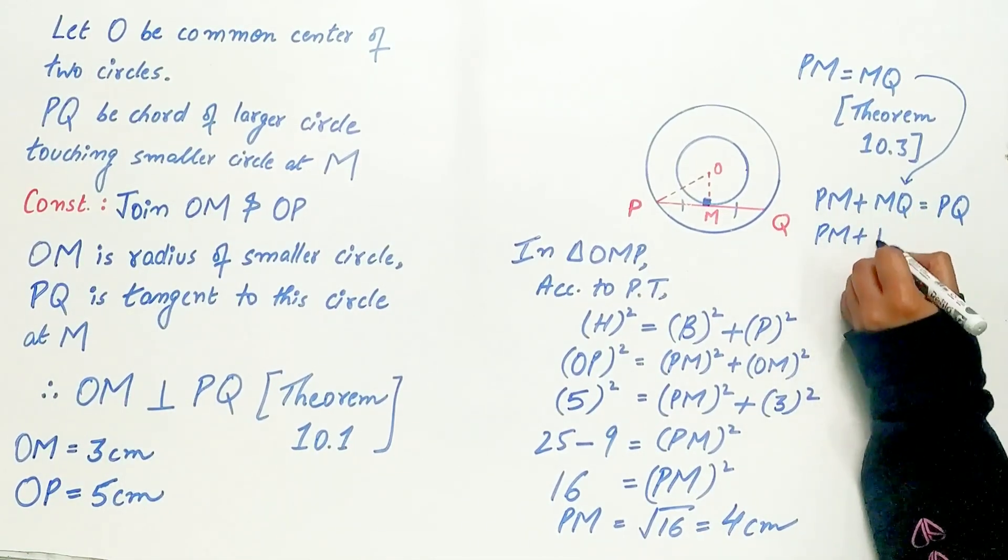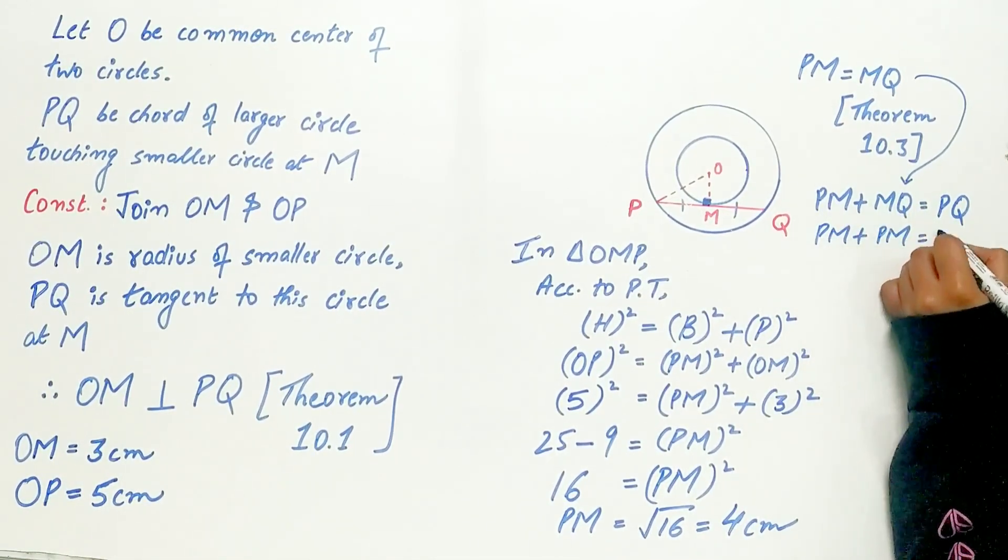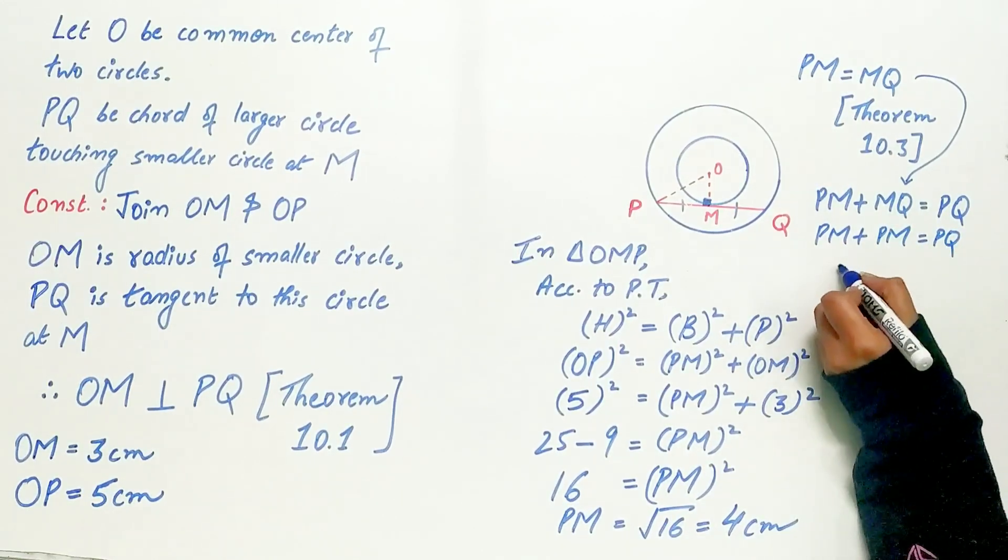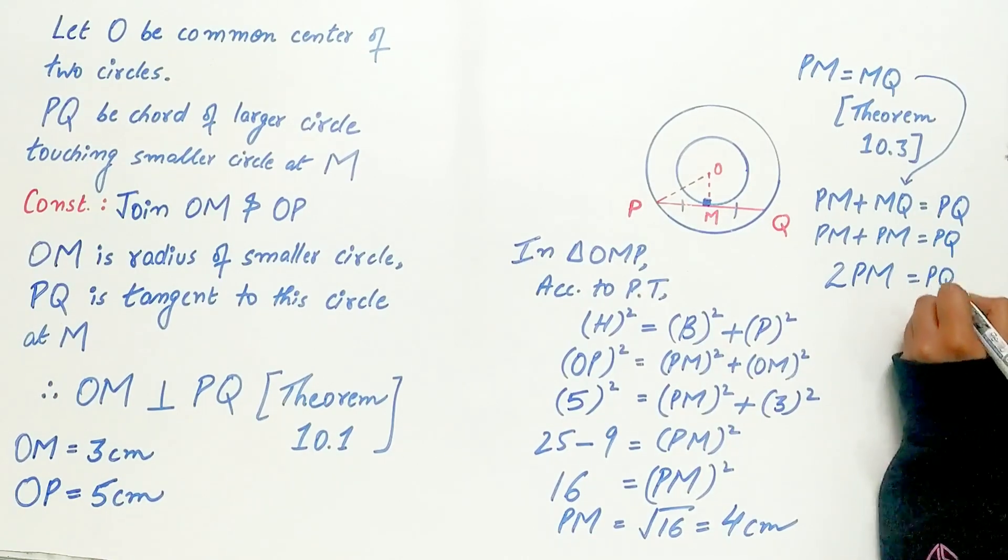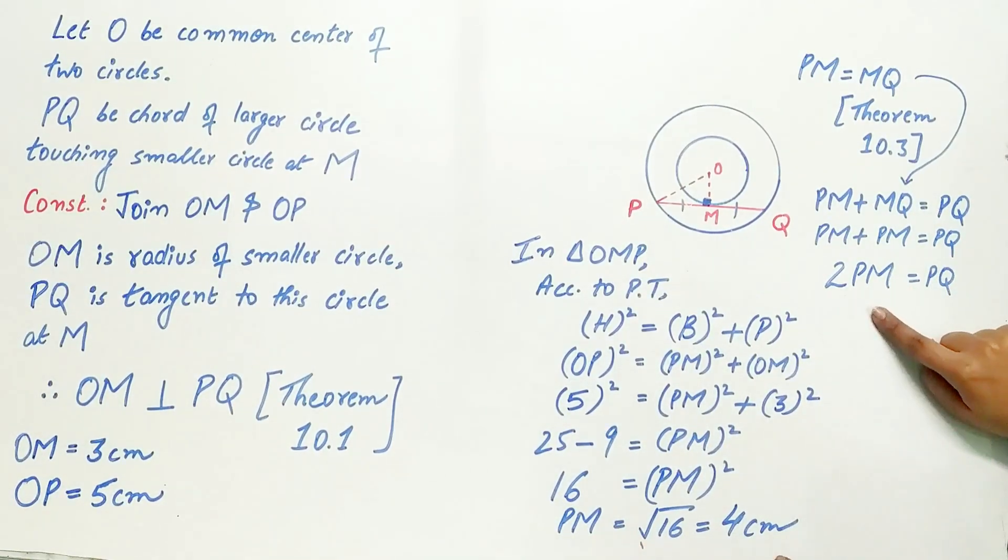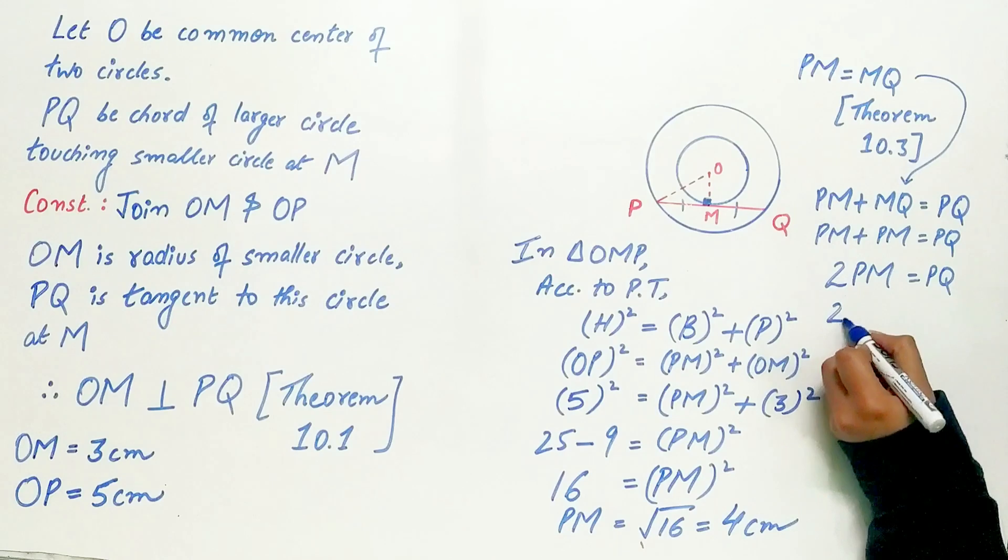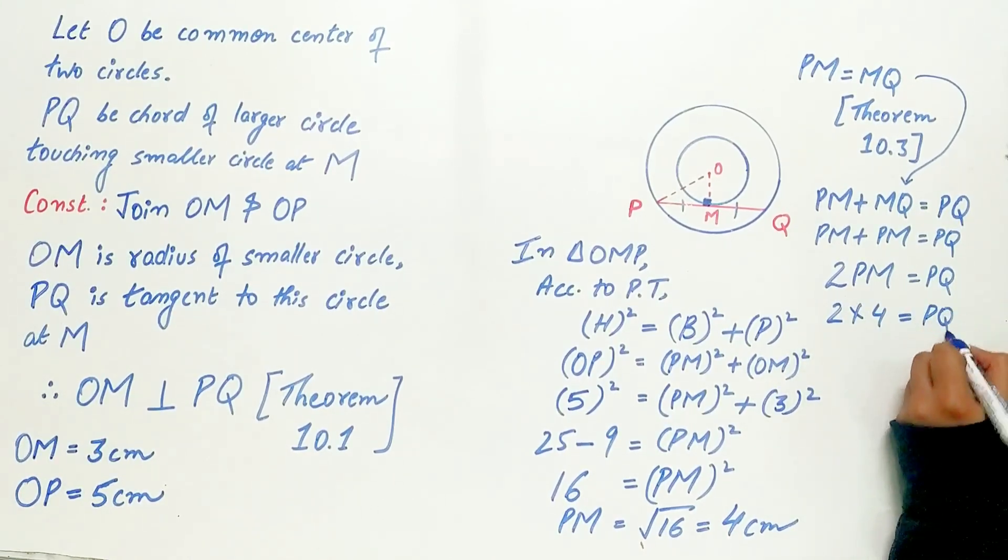PM plus PM is equal to PQ. PM plus PM is 2 times PM, which is 2 times 4, equals PQ.